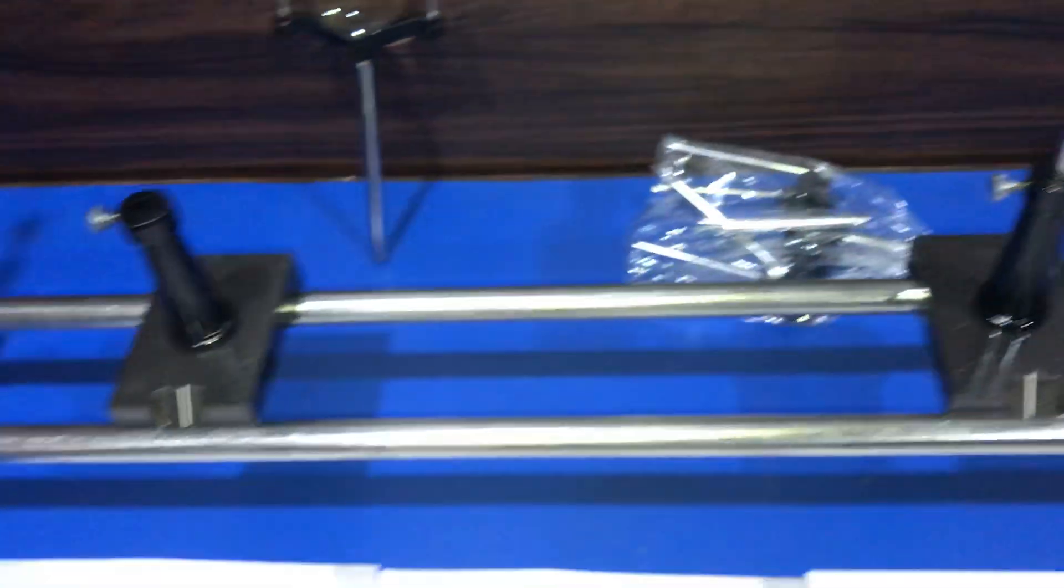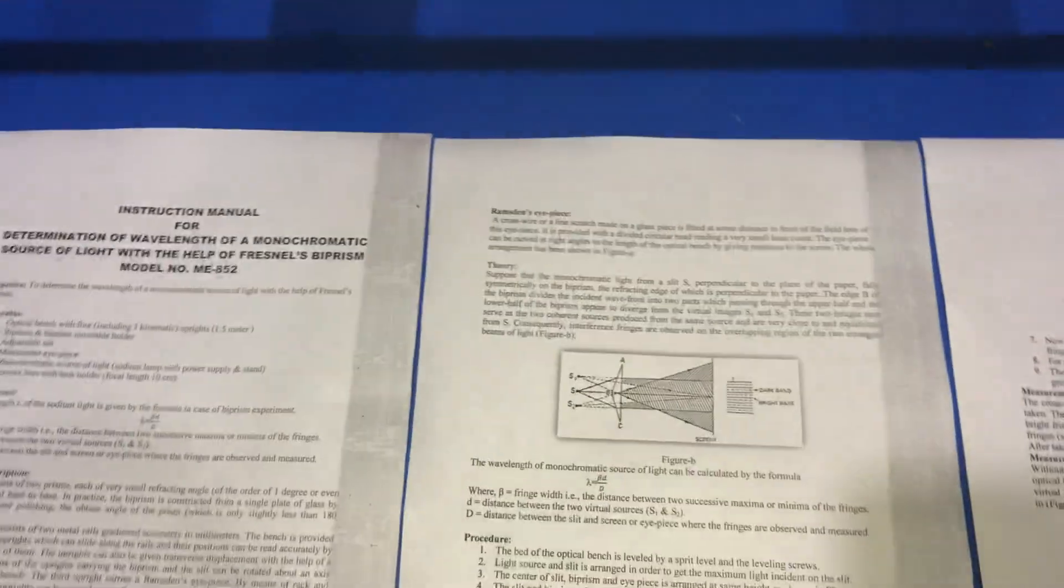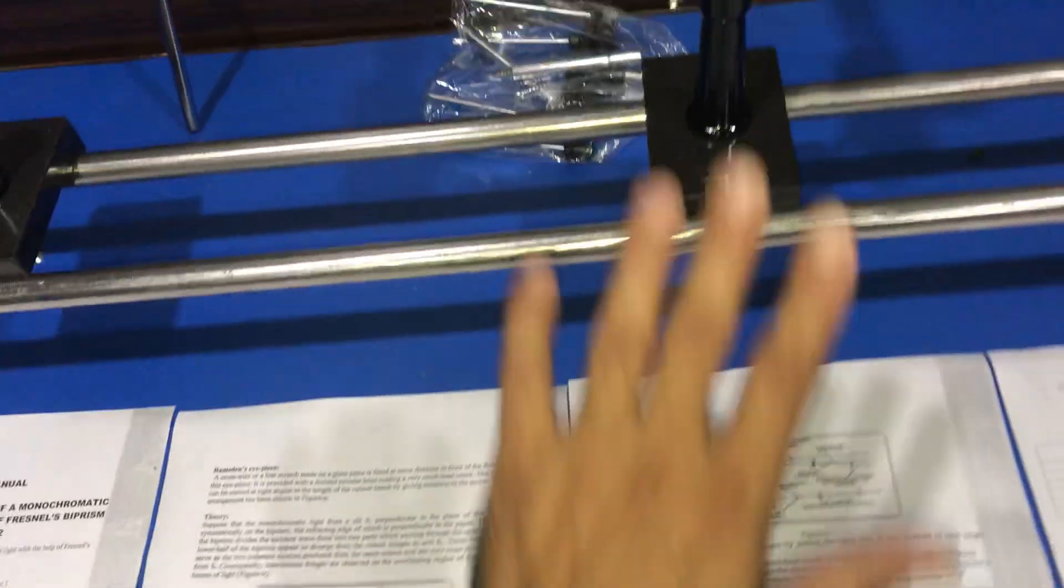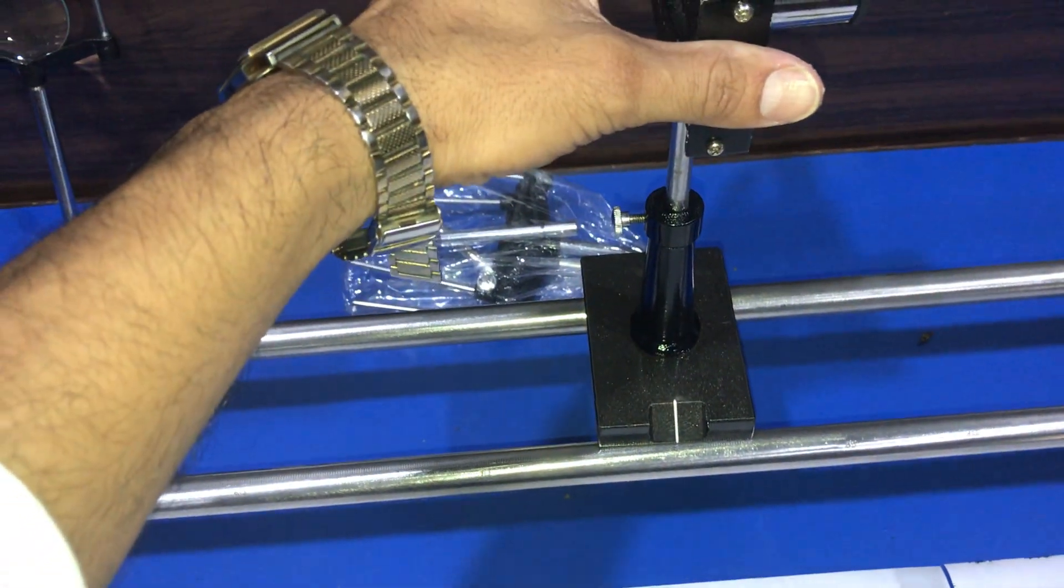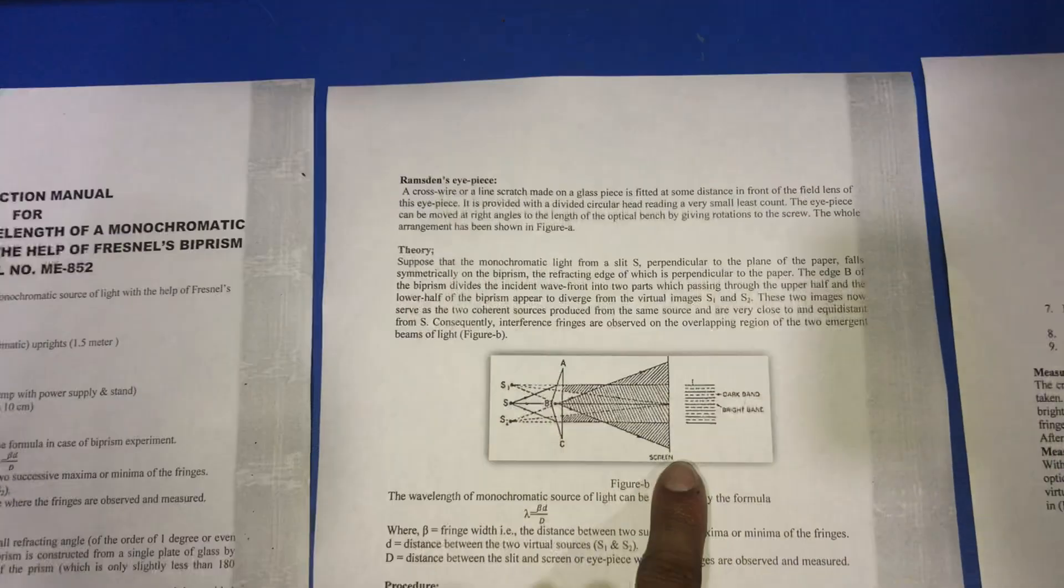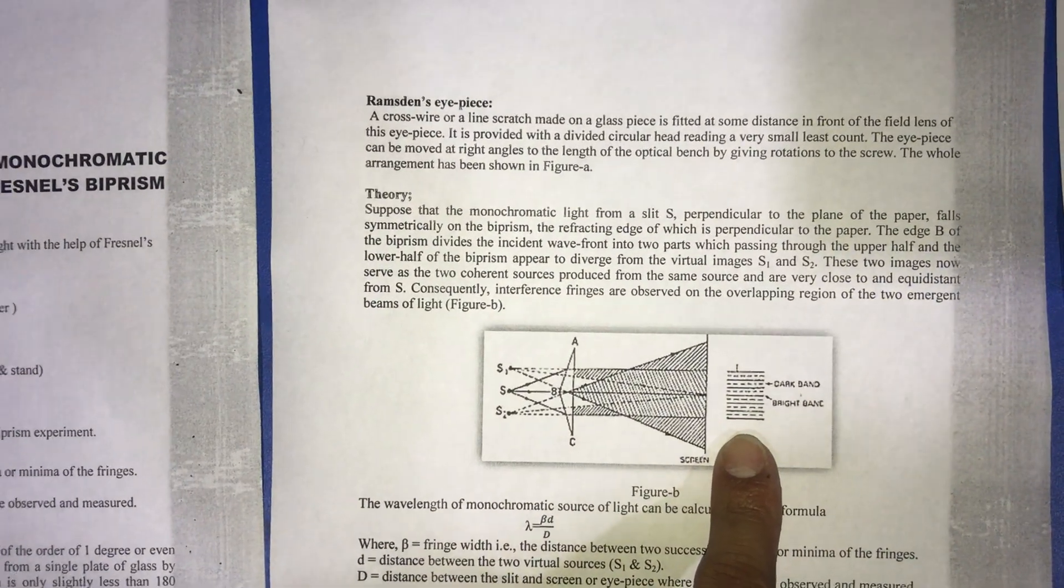Now in order to perform this experiment, first we align the sodium source, slit, Fresnel biprism, and eyepiece in proper alignment as mentioned in the procedure of the manual. When proper alignment is formed and we observe through this eyepiece, we observe straight parallel fringes.